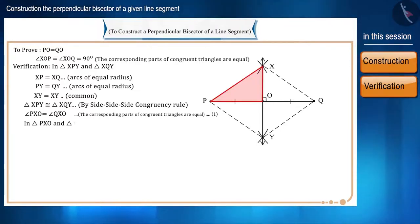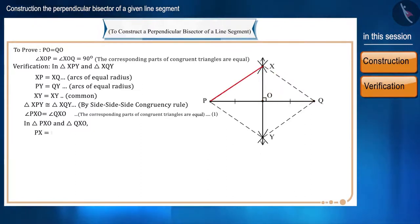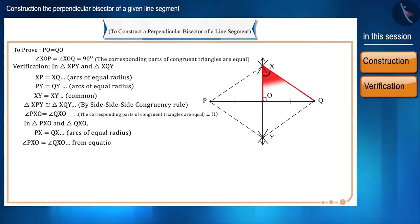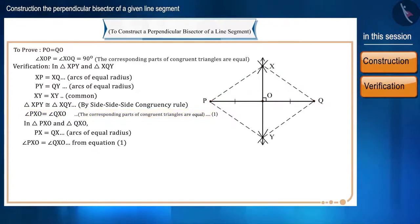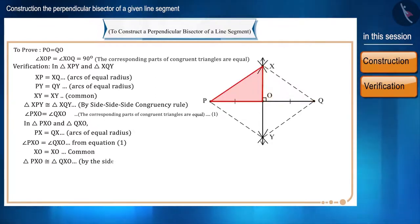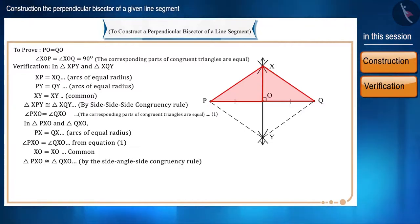Now let's take triangle PXO and triangle QXO. Side PX equals side QX because these are arcs of equal radius; angle PXO equals angle QXO by equation 1; and side XO is the common side. Therefore, triangle PXO and triangle QXO are congruent by the Side-Angle-Side congruency rule.